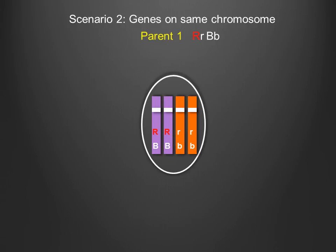Next, we will determine what phenotypic proportions of offspring can be expected from a test cross if two genes are linked — that is, on the same chromosome. Here, both the color and size genes are located on the same chromosome. Again, both homologues are depicted here, and each one has undergone replication. Both dominant alleles are paired together on one homolog, while both recessive alleles are paired together on the other homolog. This arrangement of alleles is called a cis, or coupling, arrangement.